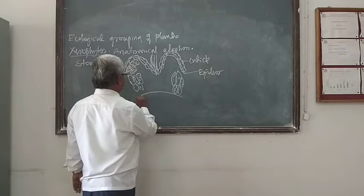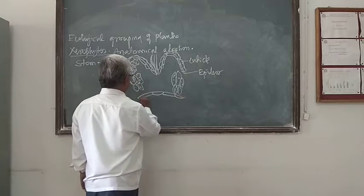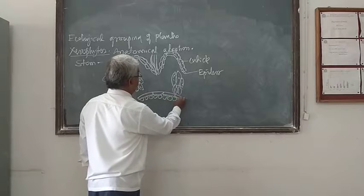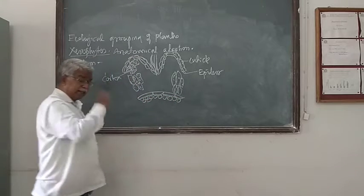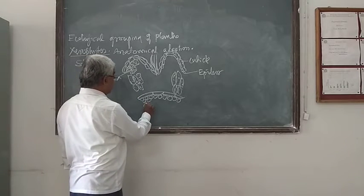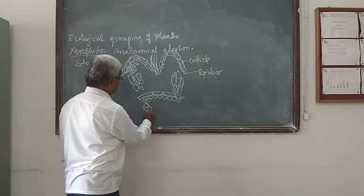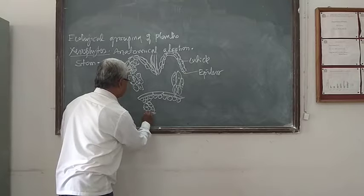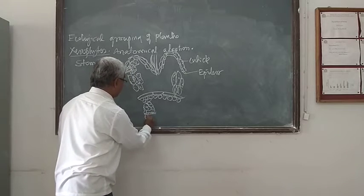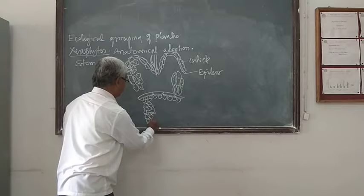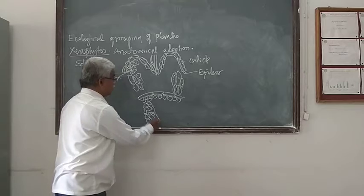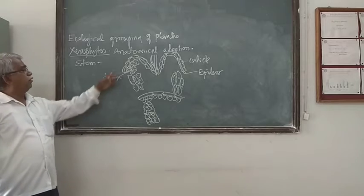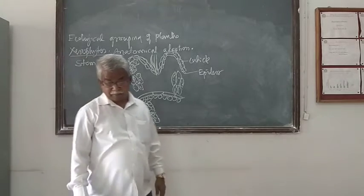Then there is the endodermis, which is like this. And then the pericycle — like this, rectangular or rounded cells — these are the pericycle. Beneath the pericycle, there is the vascular bundle: the phloem. Beneath the phloem, there is a cambium, which is a meristematic tissue. And this cambium is followed by the xylem. Such type of structure you may see in the internal transverse section of Casuarina, as per the anatomical adaptation concept.